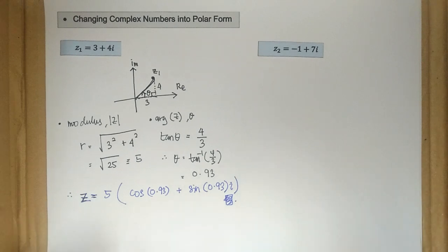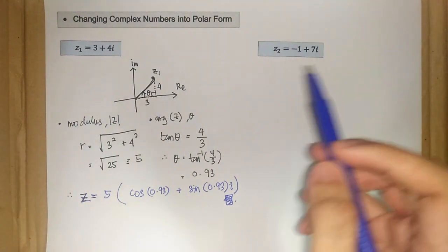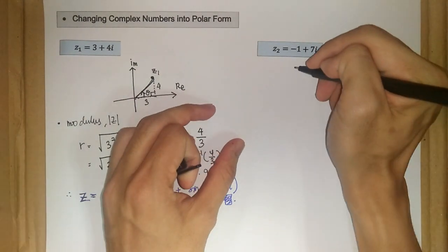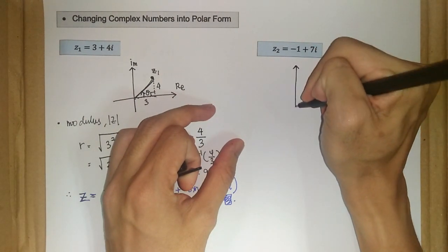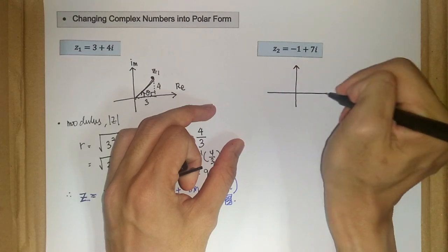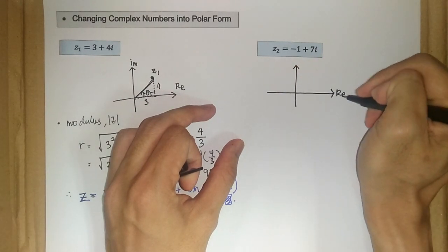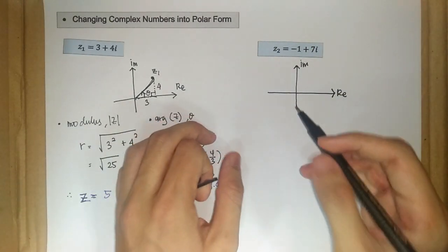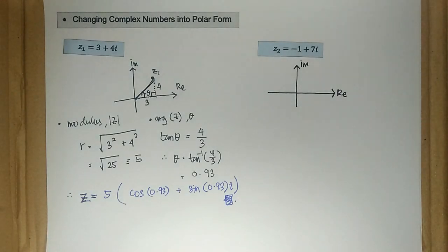So now, let's move on to the second one here. So again, we draw our Argand diagram first to locate our point, our complex number. So this is real part. This is for imaginary part. So we have negative one and seven. So it must be in this second quadrant.